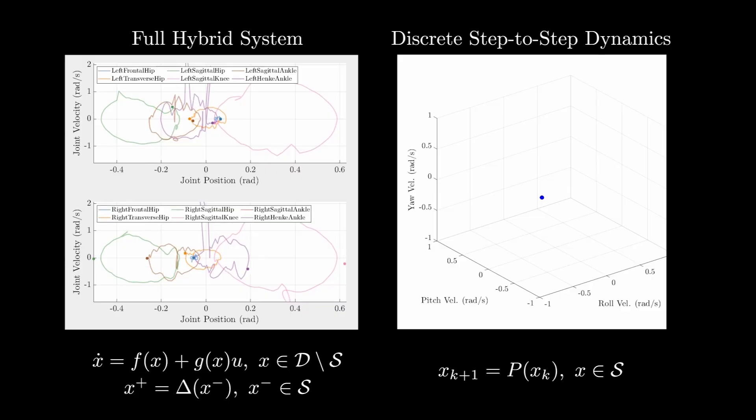This is done by first transforming our hybrid system into a discrete-time system using the step-to-step dynamics as captured by the Poincaré return map.